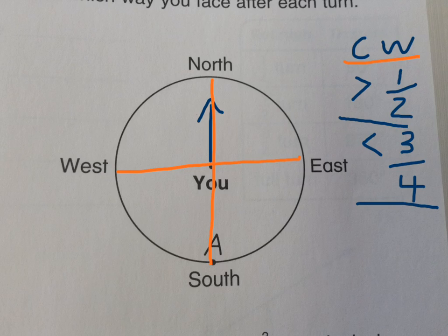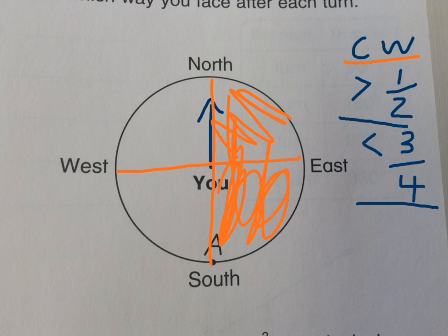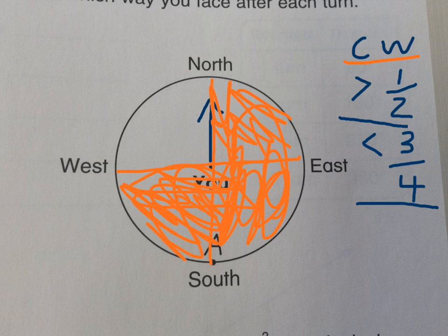Number six is similar — try that one on your own. When you're done with the homework you'll have six letters around the outside: B, C, D, E, F, and G. You're working on which way you're facing, which way is clockwise, which way is counterclockwise, and how much you're turning. A fourth turn is one section, a half turn is half the circle, and three-fourths is three-fourths of the circle. Good luck, and if you have questions please post them.